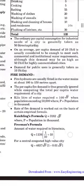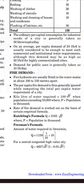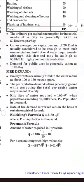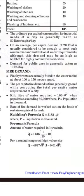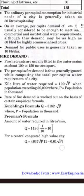The next heading is fire demand. Fire hydrants are usually fitted in the water mains at about 100 to 150 meters apart. The per capita fire demand is generally ignored while computing the total per capita water requirement of a day. The kiloliters of water required is around 100 × √P when population exceeds 50,000, where P is the population in thousands. The rate of fire demand is worked out on the basis of certain empirical formulas.